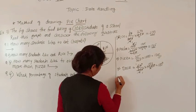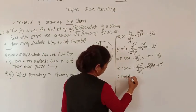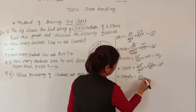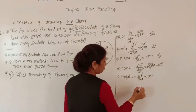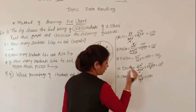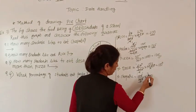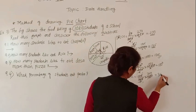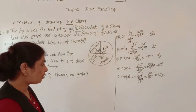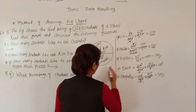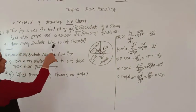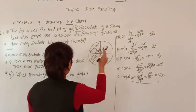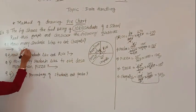For chapati: 120/360 × 1080. The zeros cancel, giving 12 × 108 / 36. Simplifying: 12 threes are 36, then 3 threes are 9, 3 sixes are 18, 3 fives are 15 — giving 360. So 360 students like to eat chapati.